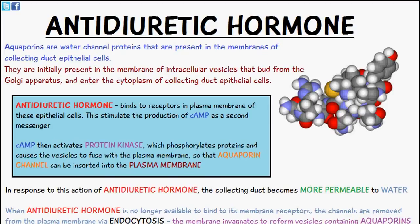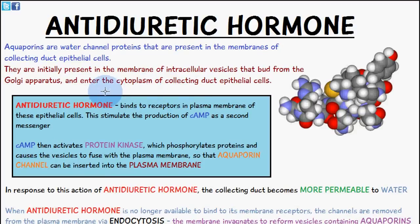Aquaporins are water channel proteins which are present in the membranes of the collecting duct epithelial cells. They are initially present in the membrane of intracellular vesicles that bud from the Golgi apparatus and then enter the cytoplasm of the collecting duct epithelial cells.